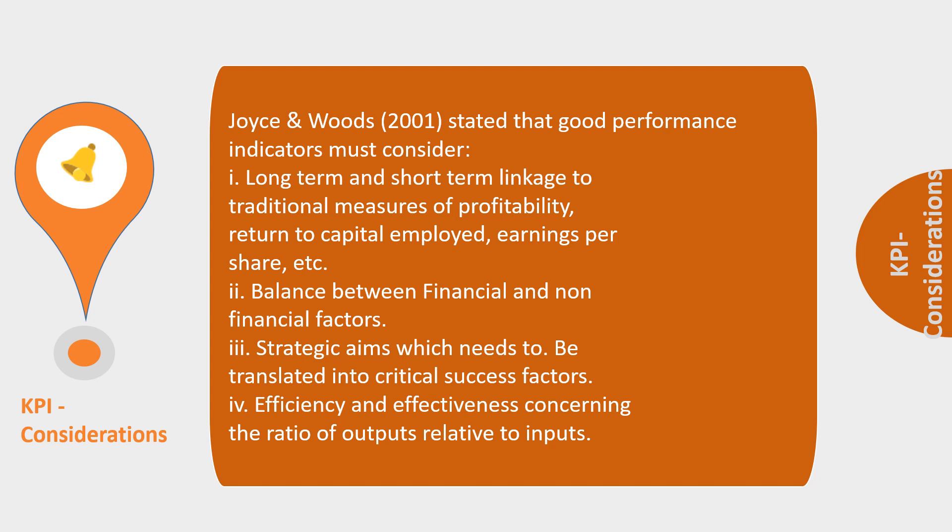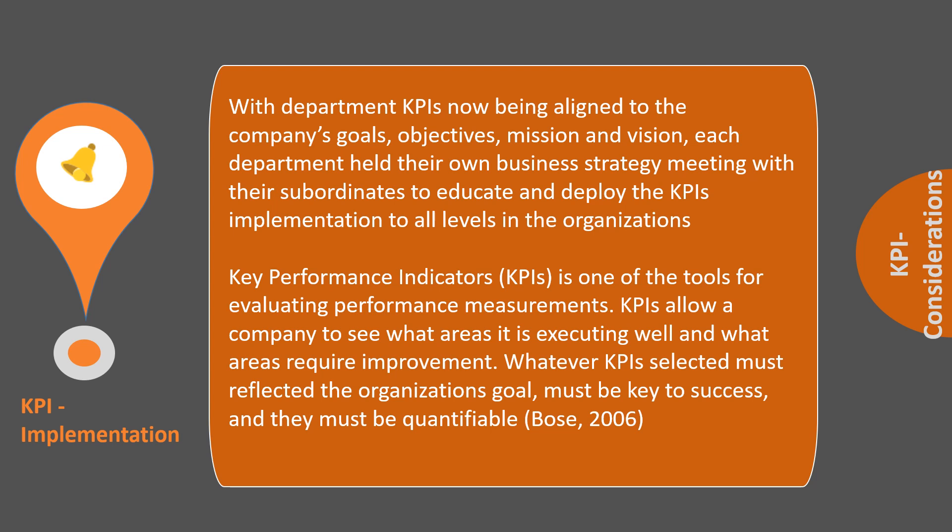In the private sector you are trying to make a profit, so this is going to impact upon your bottom line. If we think about the implementation of KPIs, KPIs are now being aligned to the company's goals and objectives, mission and vision. Each department held their own business strategy, keeping with their subordinates to educate and deploy KPIs implementation to all levels of the organisation. KPIs allow a company to see what area it is executing well and what area requires improvement. Whatever KPIs are selected must reflect the organisational goal and must be key to success and they must be quantifiable, according to Bose 2006.